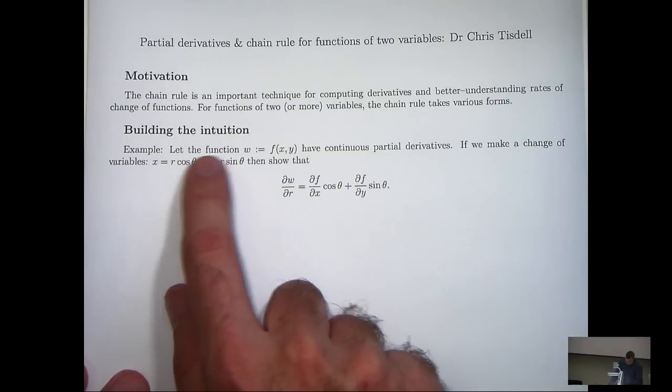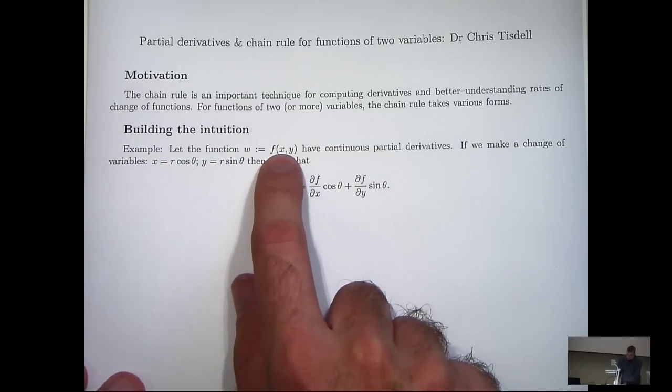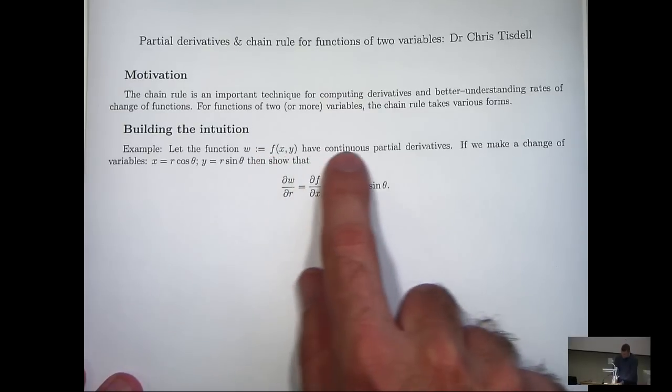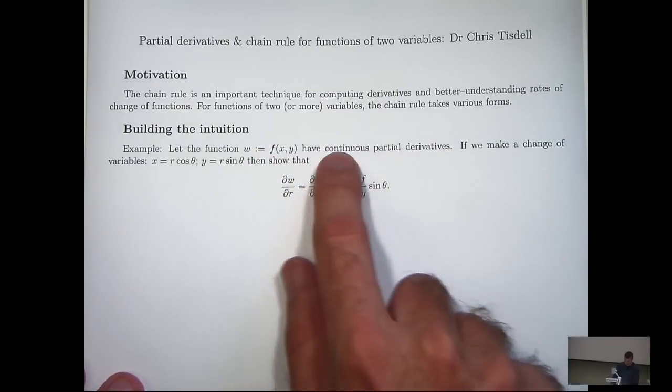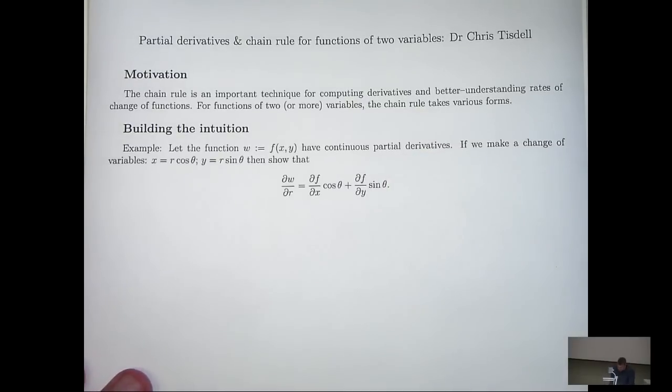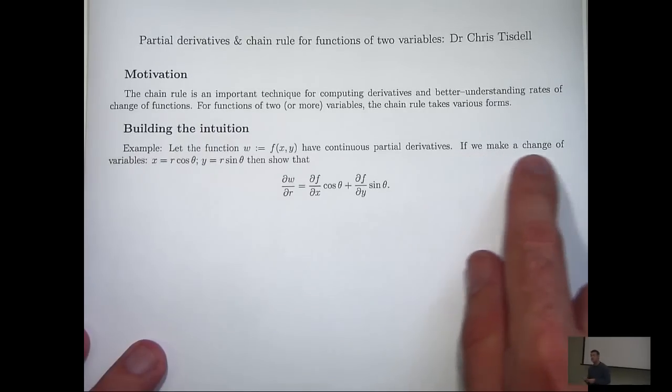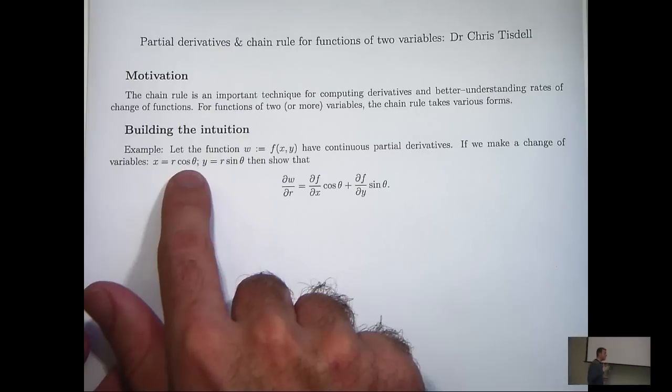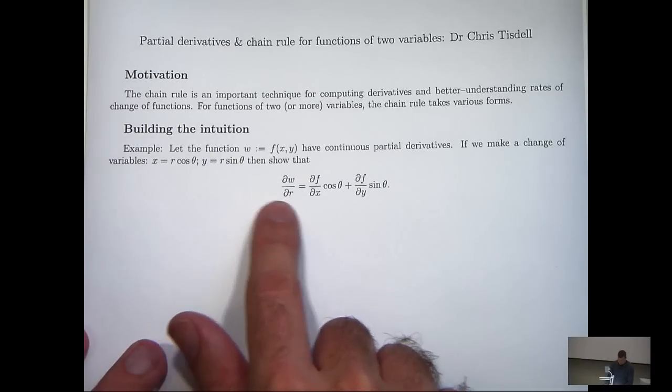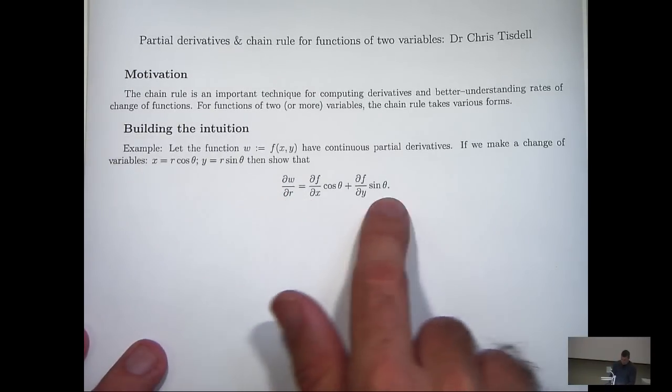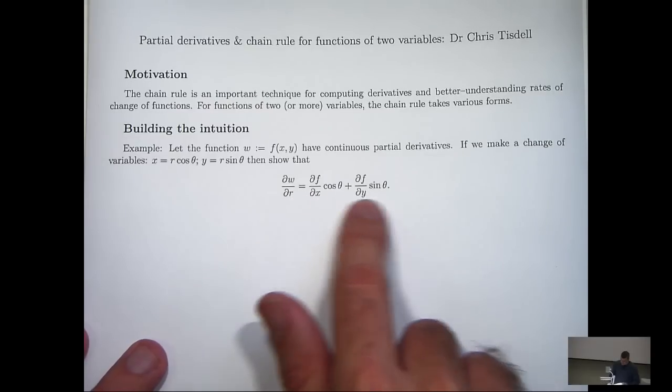So consider the following function where the function has continuous partial derivatives. Now you may think why do we make this assumption here? Well, that's one of the assumptions to ensure that the chain rule works. Now if we make a change of variables, x equals r cos theta and y equals r sin theta, then show that the partial derivative dw/dr satisfies this expression here.